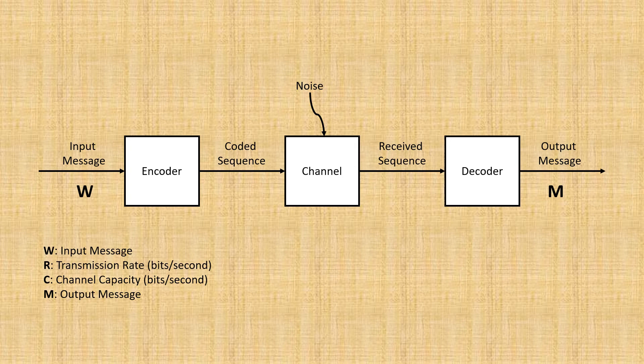When the received sequence exits the channel, it is then decoded using a decoder that properly matches the encoder we used, and we get an output message. The probability of error is the probability that the output message is not equal to the input message. We want this to be really small.